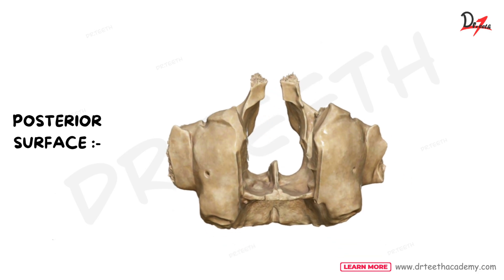Next is the posterior surface or the infra-temporal surface which is concave and directed backward and laterally. It forms the anterior wall of the infra-temporal fossa. Postero-inferiorly, the maxillary tuberosity can be seen. It is a rounded eminence and gives origin to the superficial head of the medial pterygoid laterally. Above this maxillary tuberosity the surface forms the anterior wall of the infra-temporal fossa grooved by the maxillary nerve.